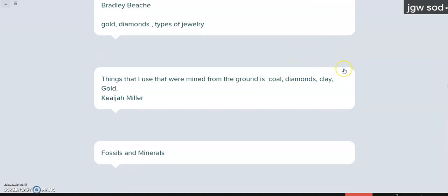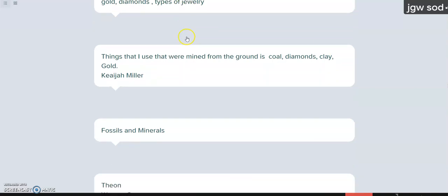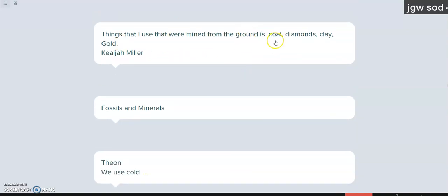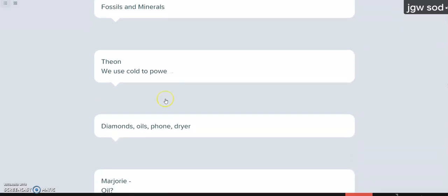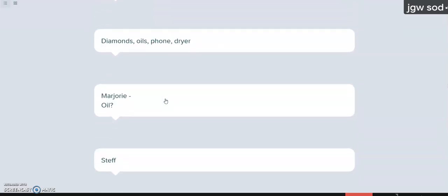All right, responses. Bradley said gold, diamond, types of jewelry. That's true. Gold and diamonds were both mined from the ground. Gold, coal, clay. Somebody said diamonds, oils, phones, dryer. I don't know about phones. We don't mine phones in the ground, but we do use silicon that we pull out of the ground to make the screen on a phone. We do pull silver out of the ground and we use that to make some of the wires in there.